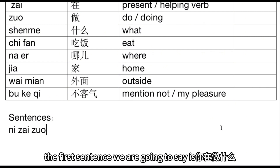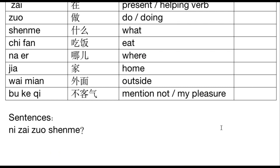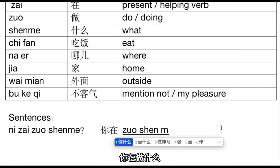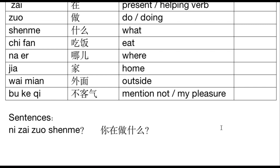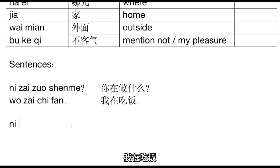The first sentence we are going to say is 你在做什么 (nǐ zài zuò shénme), which means 'What are you doing?' And the answer is 我在吃饭 (wǒ zài chīfàn), which means 'I am eating.' So someone asks you 你在做什么 and you answer 我在吃饭.